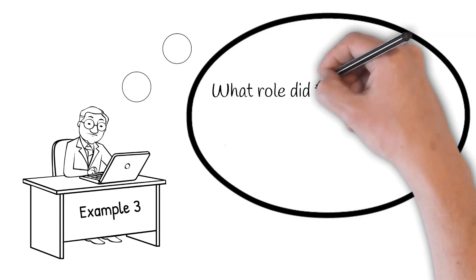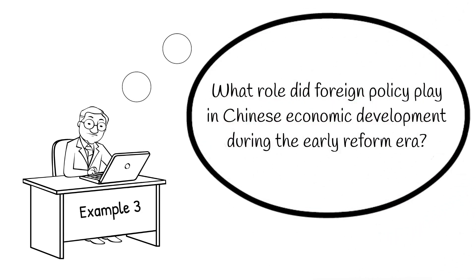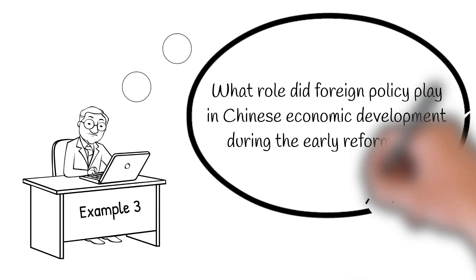Here's an alternative: 'What role did foreign policy play in Chinese economic development during the early reform era?' That's much better. Now we can study foreign policy choices through historical records or official documents and compare our findings with economic developments — looking at GDP data and the way in which foreign trade and investment shaped GDP during a given period. We'd still have to define a clear time period and make a convincing case about the causal link, but we're on much sounder footing now.